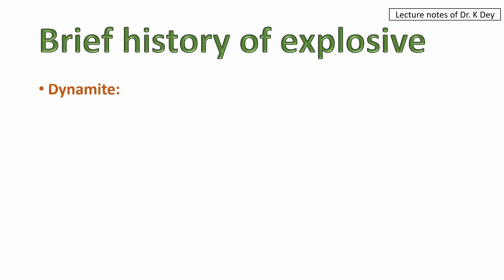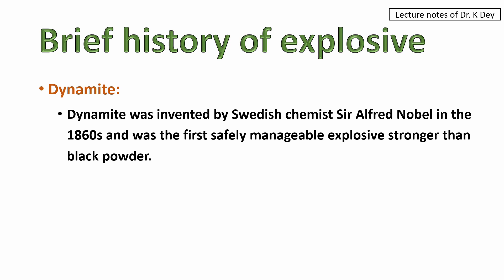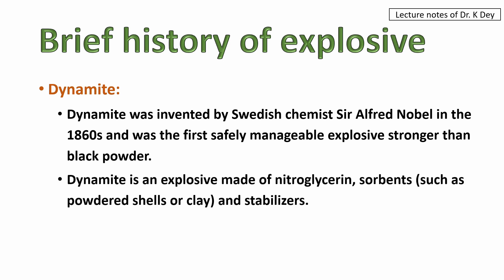Another is dynamite. Dynamite was invented by Swedish chemist Sir Alfred Nobel in the 1860s and was the first safely manageable explosive stronger than black powder. Dynamite is an explosive made of nitroglycerin, an absorbent such as powdered shells or clay, and stabilizers.